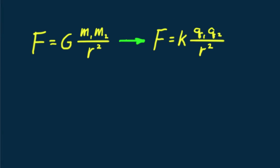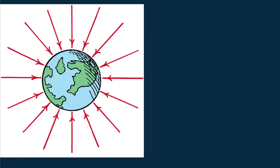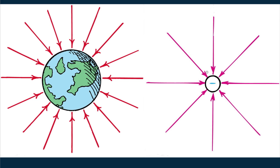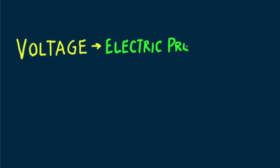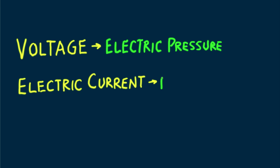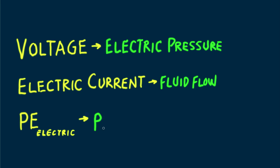We'll learn later about the electric field and see it's analogous to the gravitational field. Just as a gravitational field surrounds an object with mass, an electric field surrounds an object with electric charge. Then we'll learn features of electricity that are analogous to fluids. Voltage is an electric pressure, analogous to fluid pressure. Electric current is analogous to fluid flow in pipes. And electric potential energy is analogous to gravitational potential energy.